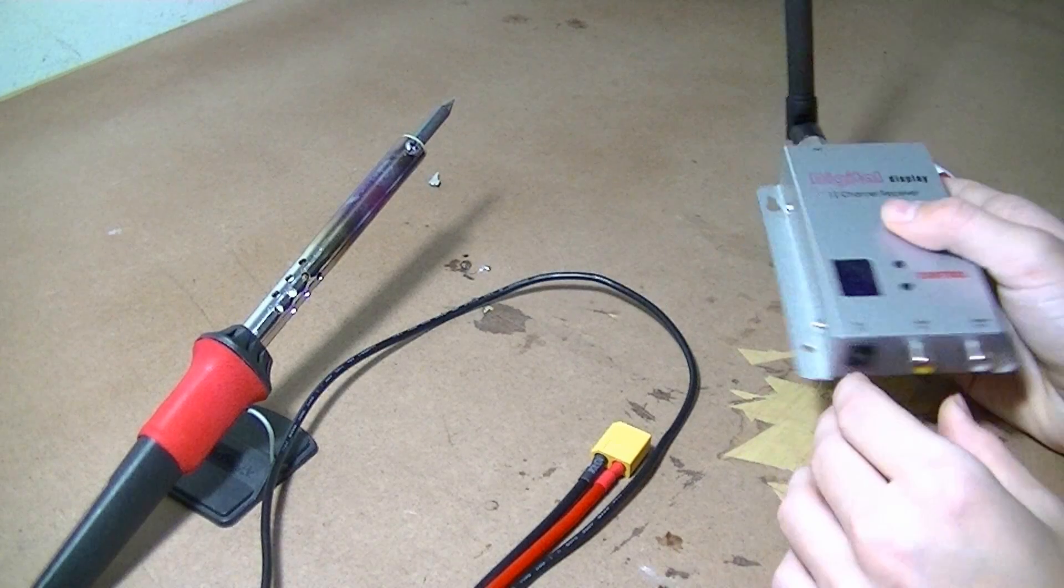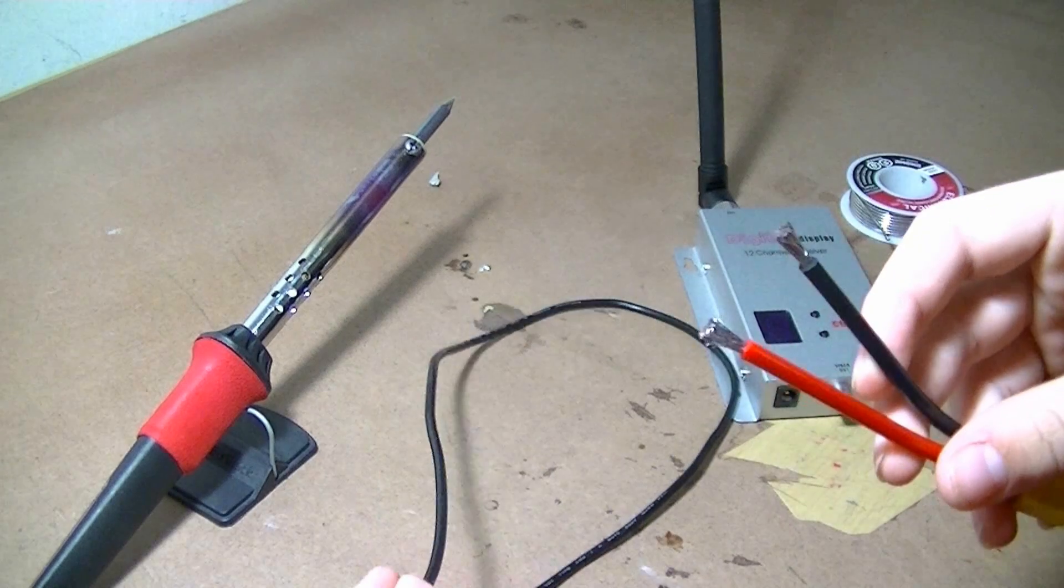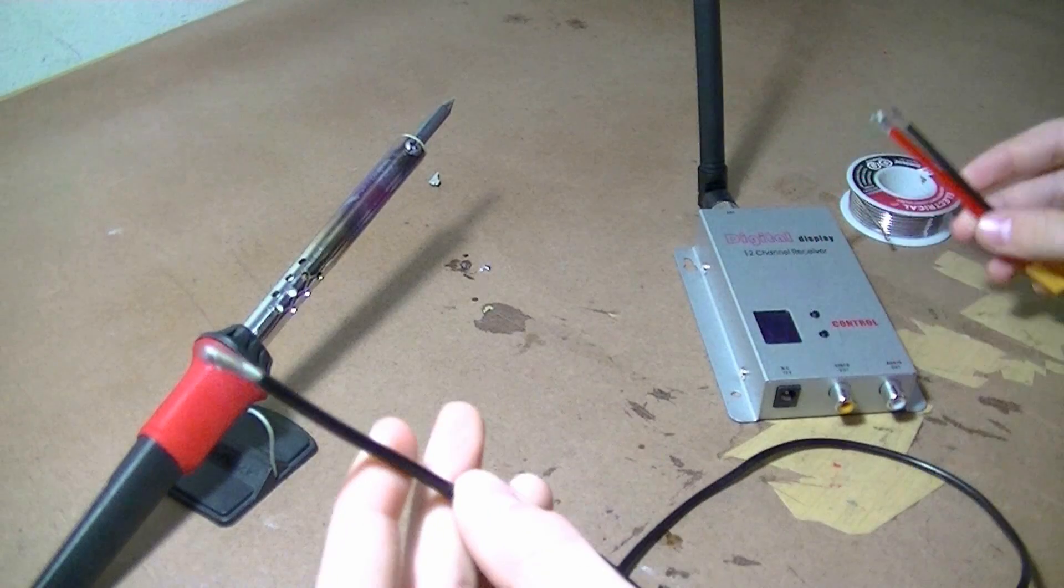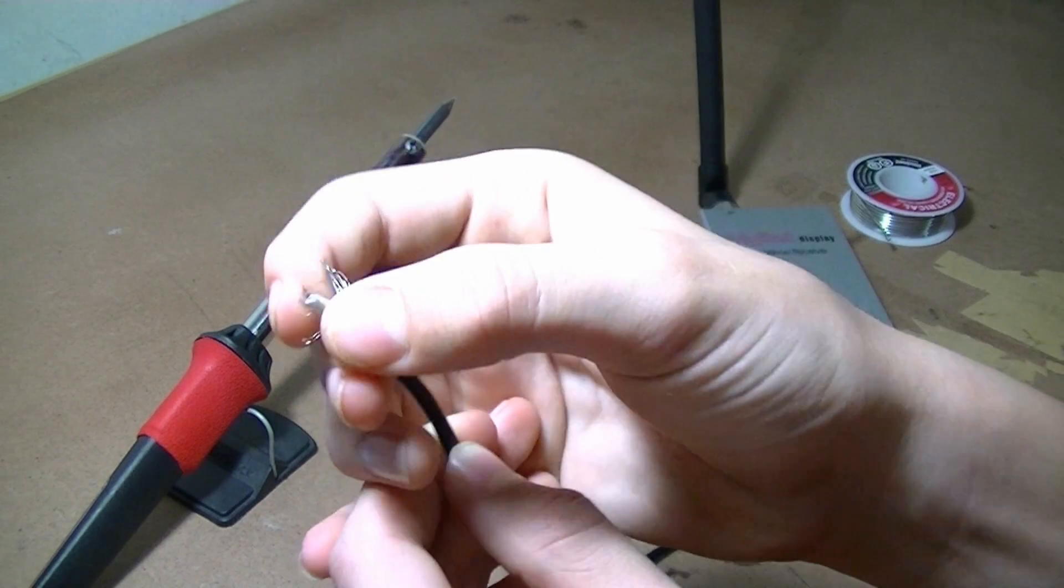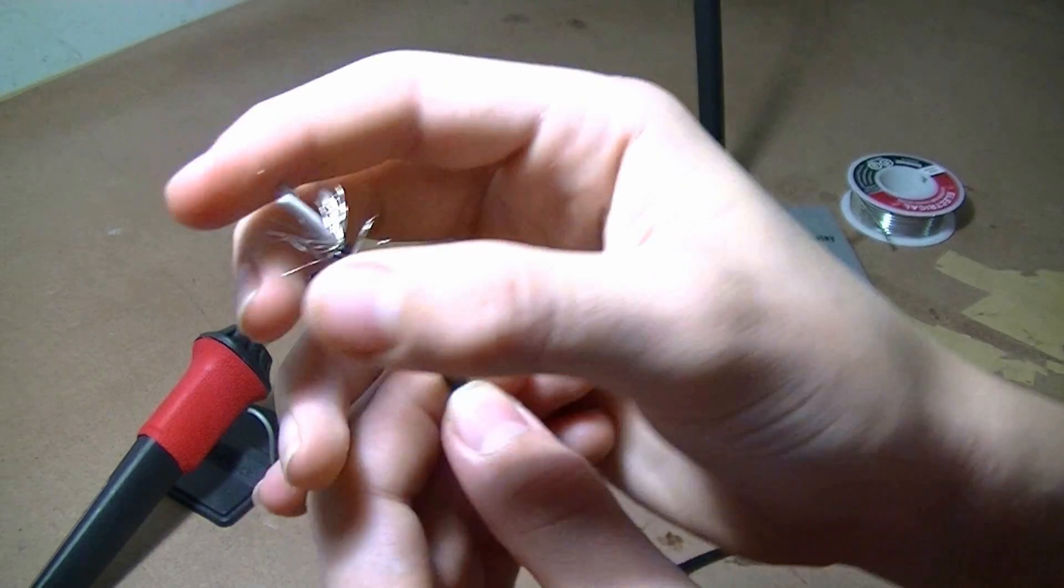First, strip all the wires on your battery plug and the plug that goes in your receiver. Then pull all the little wires back and you'll find an insulated wire.